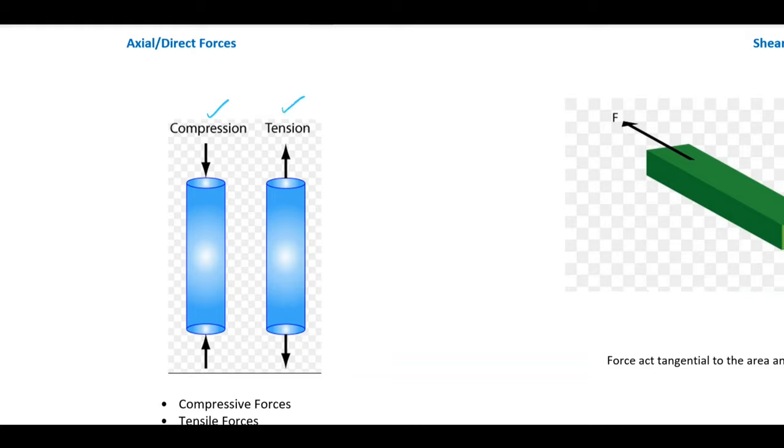Axial forces are further classified into two types: compressive load and tensile load. When the forces tend to increase the length, we call it tensile load. When the forces tend to decrease the length, we call it compressive load.